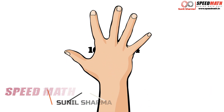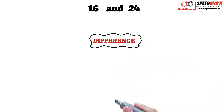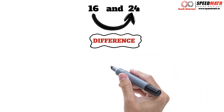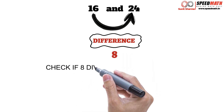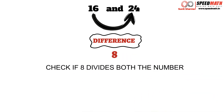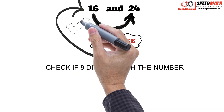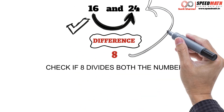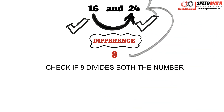Let's say we need to find HCF of 16 and 24. Step 1: find the difference between these two numbers. So 24 minus 16 will give you 8. Step 2: check whether 8 divides both the numbers. Yes, 8 divides 16 as well as 24. Since 8 divides both the numbers, therefore HCF has to be 8.